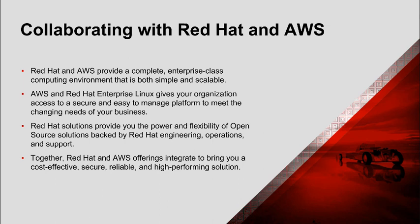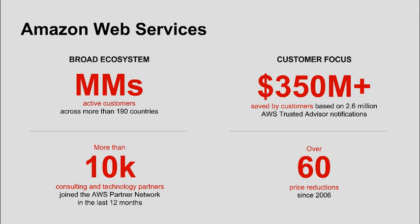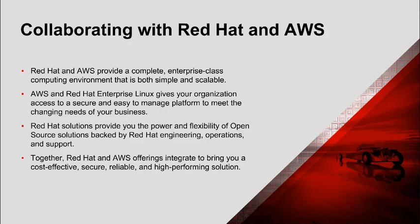Everything we do starts with our customers and works backwards. Roughly 90% to 95% of the AWS roadmap is driven by what customers tell us matters. Customers committed to the cloud know that the best way to illustrate openness and flexibility is by what you actually provide and deliver. Red Hat and AWS offerings are dedicated to providing the most cost-effective, reliable, secure, and high-performance solutions. We take your requirements seriously and move quickly.